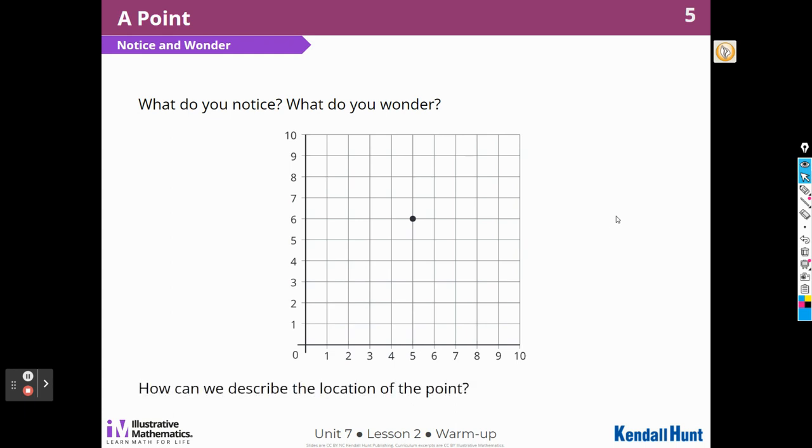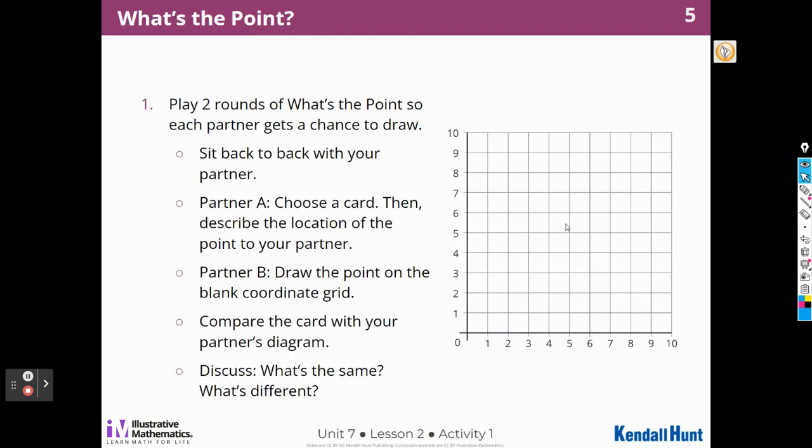How could we describe the location of the point? Well, it's kind of in the middle of the grid, but toward the top. It's where the two lines intersect or come together. Two lines intersect or come together, and that one line is line 5 and one line is line 6, and they cross each other.